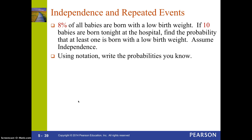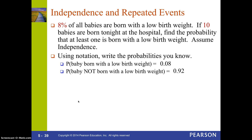Using notation, we write the probabilities we know: the probability that a baby is born with a low birth rate is 0.08. Using the complement rule, the probability that a baby is NOT born with a low birth rate is 92%, since P(A complement) = 1 − P(A), and these two probabilities add up to 100%.